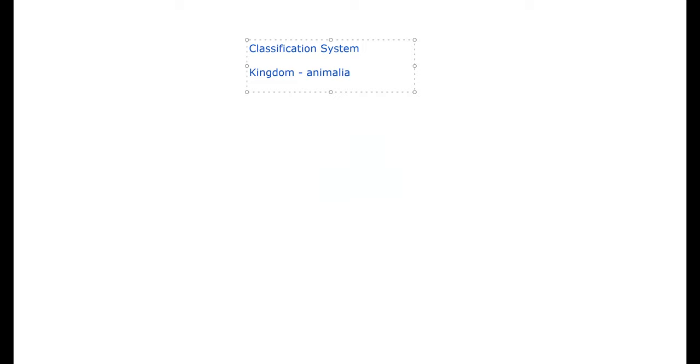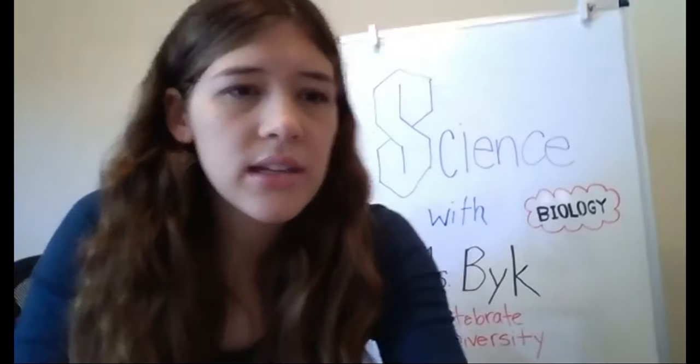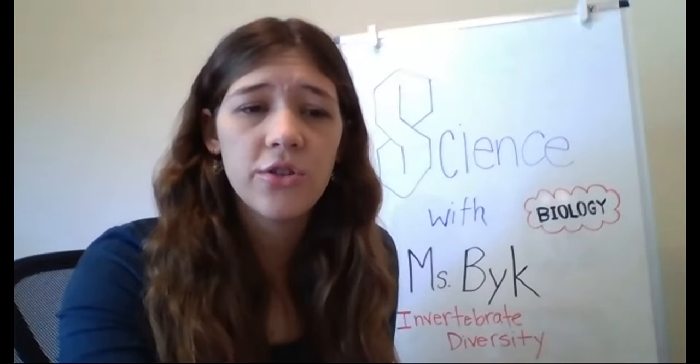If you are not on Google Classroom, I will put the code in the chat so you can log on and get into the seventh grade class, because that is where all your assignments are going to be and where your teachers are posting announcements. So I'm going to go back to my whiteboard. The first level is kingdom — if you're an animal you are in kingdom Animalia, the animal kingdom.